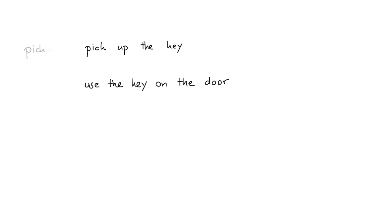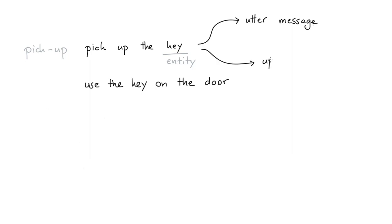Here we might have the pick up intent, and we've got ourselves an entity over here. But if a user says pick up the key, then two things need to happen. For starters, we have to utter some sort of message to the user indicating that indeed we've picked up something. But also we have to update the state of the video game, because if you haven't picked up the key beforehand, you should not be able to use that key to open the door.